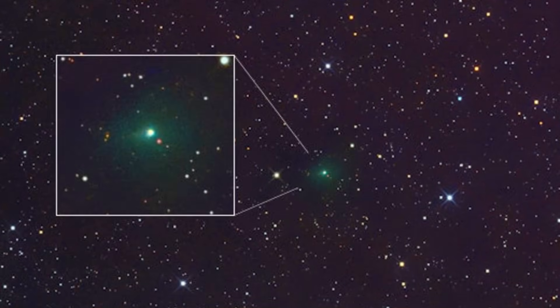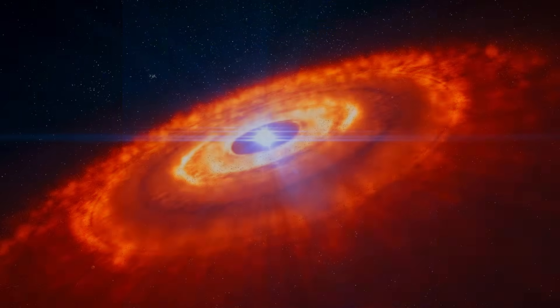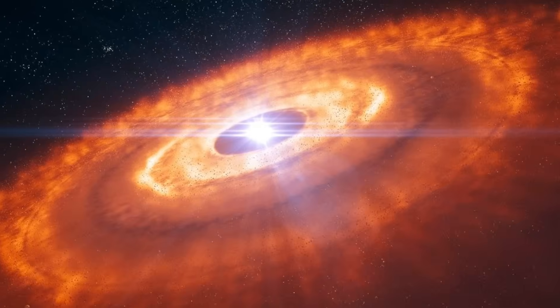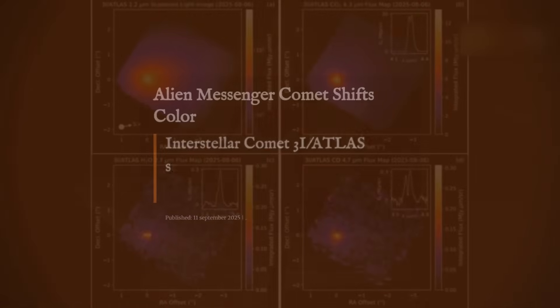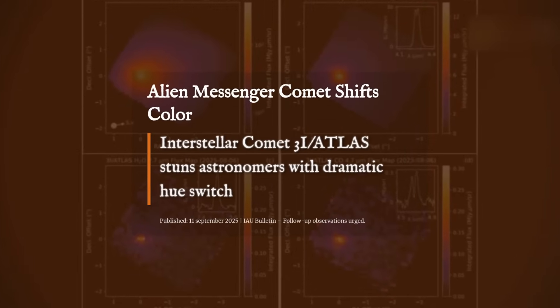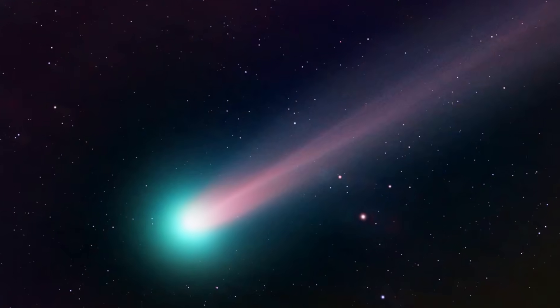But beneath the glow, stranger mysteries wait. This object became active far from the sun, challenging everything we thought we knew about comet chemistry and the birth of planetary systems. 3I Atlas is revealing secrets that could upend decades of comet science. So what is it really trying to tell us?